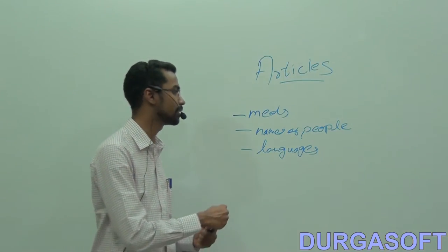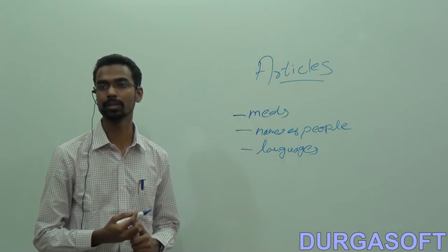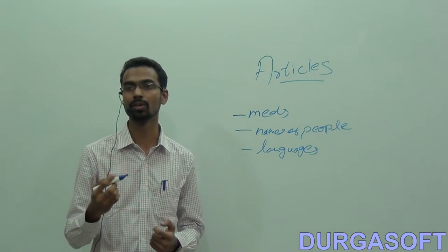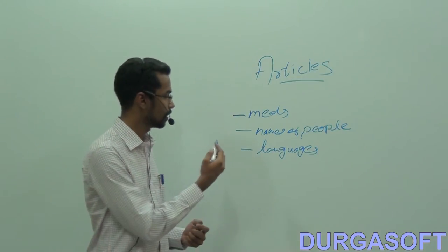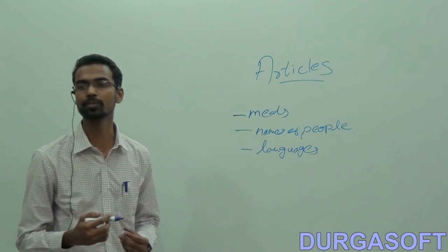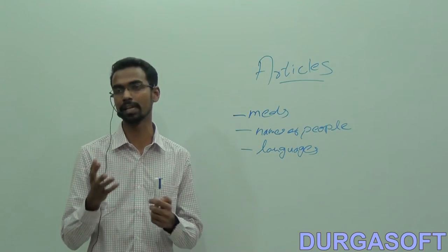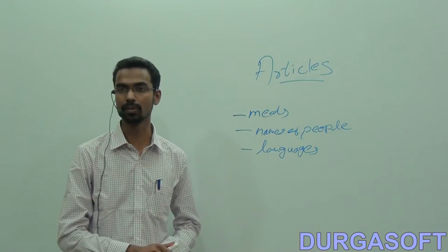Similarly, we don't use the definite article before the names of people. That's quite clear. We don't say the John or the Ram or the Abdul. No. We also don't use the definite article before the names of languages. We don't say the English or the French. We don't use any article before the names of languages.